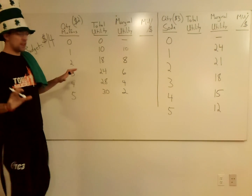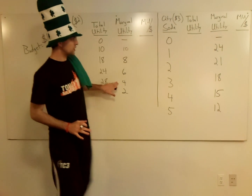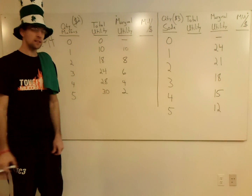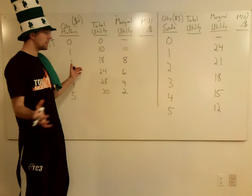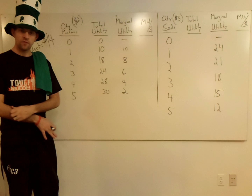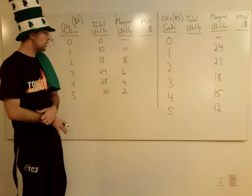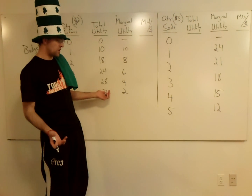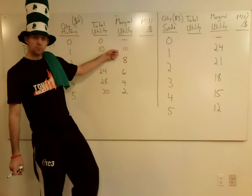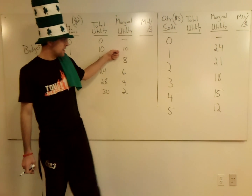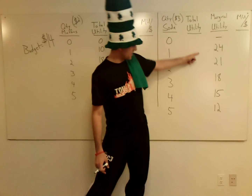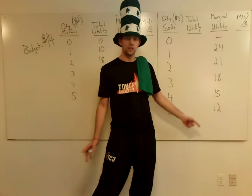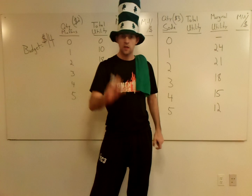Now you have your marginal utility for both goods. What people did on the test is they said, 'I have enough information to figure out the budget,' and they just picked the highest marginal utility. They noticed the highest marginal utility on the muffin side is 10, and the lowest on the soda side is 12 — so they said, 'I'd buy all the sodas.' That was a mistake. Don't do that.